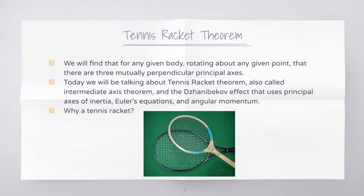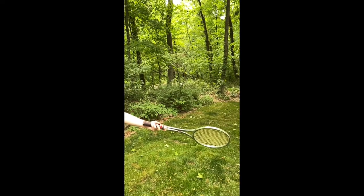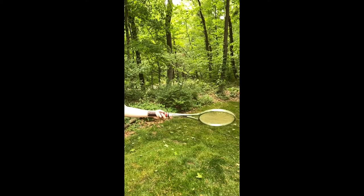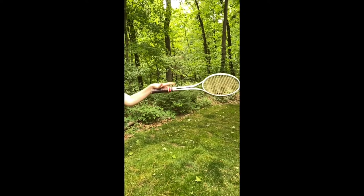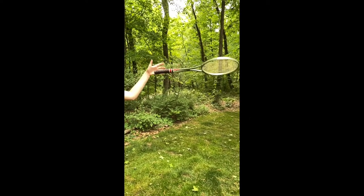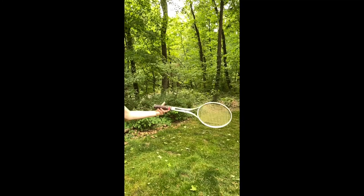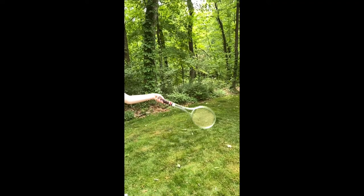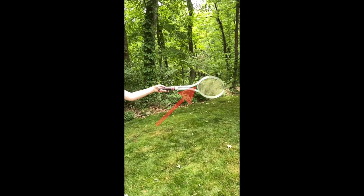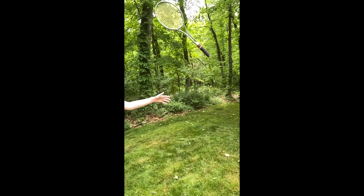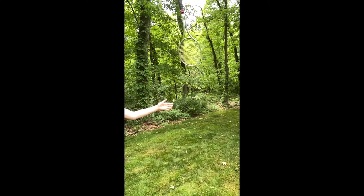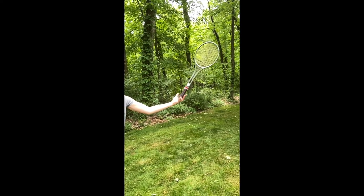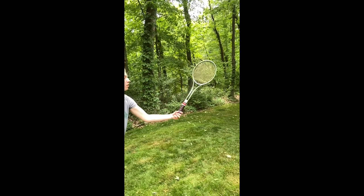What happens when the tennis racket gets tossed up in the air, rotating at each of its principal axes? Tossing the tennis racket in the air along the first principal axis of rotation looks like this. As we can see, the tennis racket stays stable in its rotation and follows the correct path. When we toss the tennis racket in the air along the third principal axis, it looks like this. Just like before, we can see that the racket was stable and stayed in its rotational path.